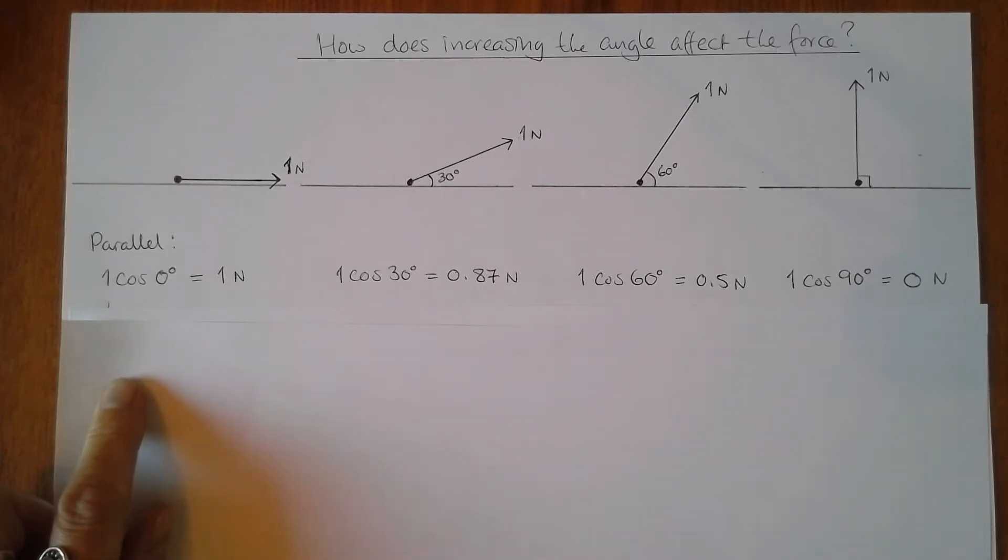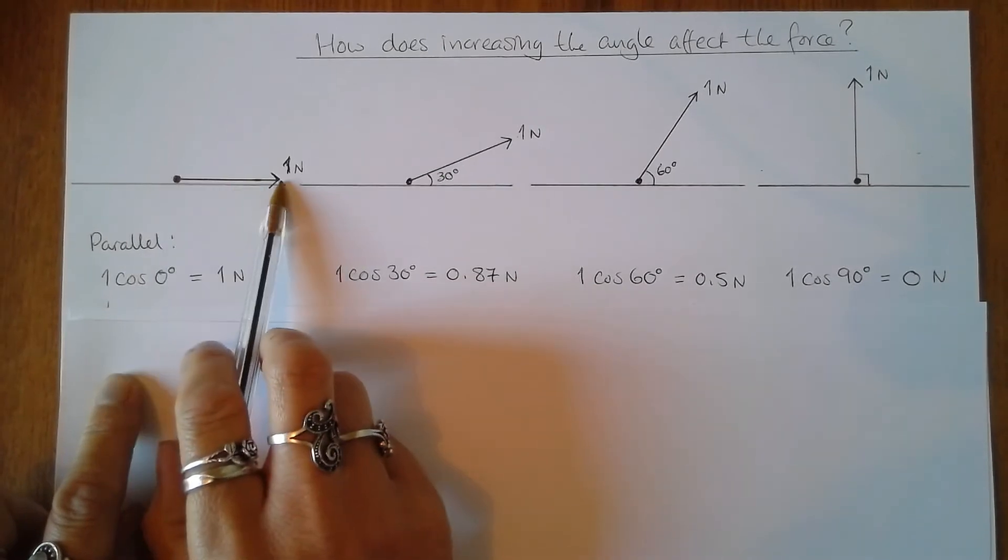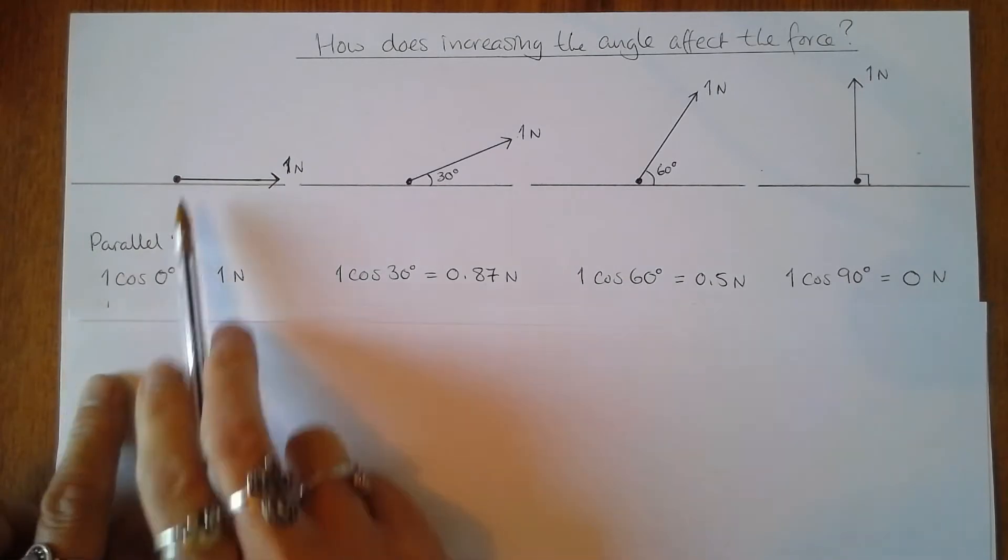How does increasing the angle affect the force and what's it got to do with trigonometry? I'm going to start with a one newton force applied fully parallel to the slope.